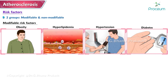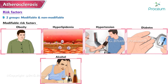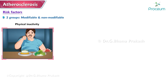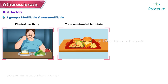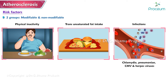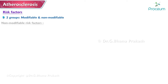Additional modifiable risk factors include diabetes, alcohol, cigarette smoking, physical inactivity, trans unsaturated fat intake, and infections such as Chlamydia pneumoniae, cytomegaloviruses, and herpes viruses. Non-modifiable risk factors include the following.